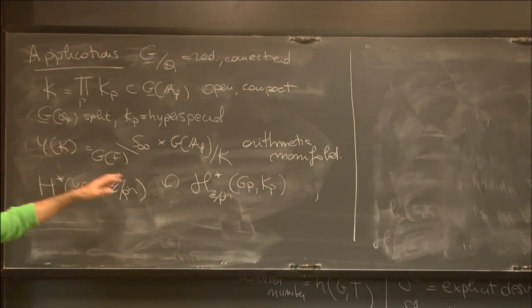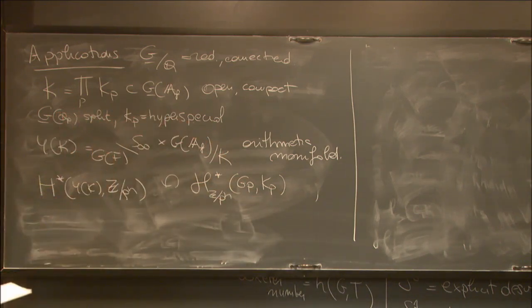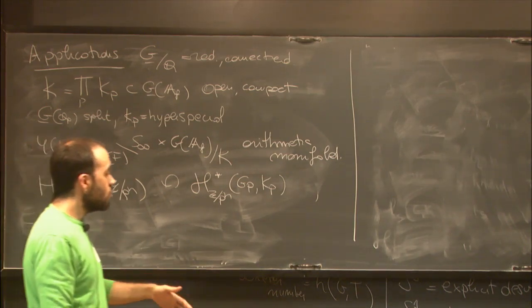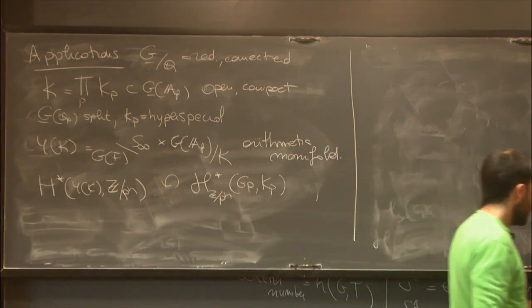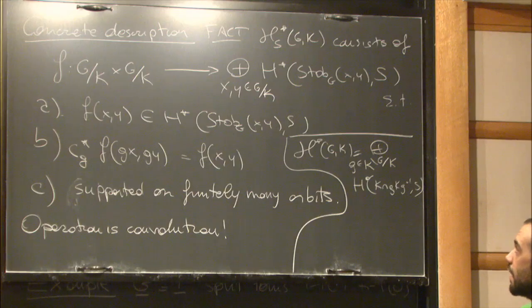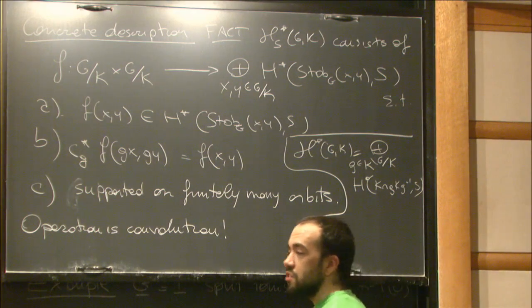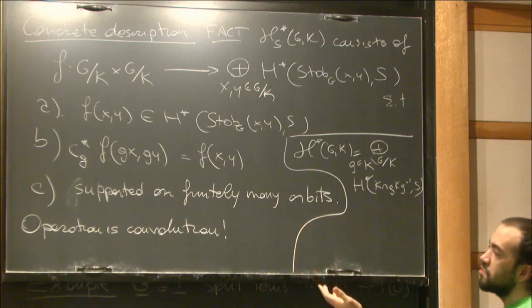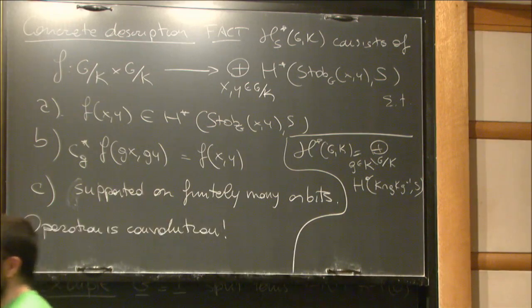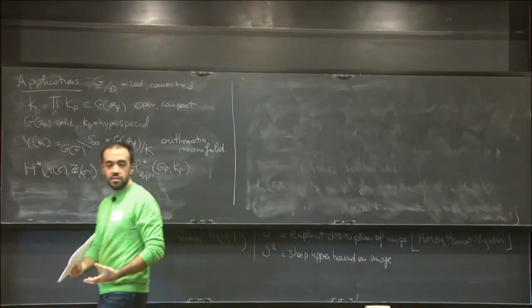I'm going to take Y(K) = G(F) \ S_∞ × G(A_F) / K to be the arithmetic manifold. The cohomology of this arithmetic manifold with Z/p^n coefficients is acted upon by my spherical algebra at p, again with Z/p^n coefficients for every n. I'll write G_p, K_p for my G(Q_p) and K_p. Now it is indeed the time to move on to the p-adic setup. These are profinite groups which are finite index into the maximal compact, and these subgroups tend to have a commutator subgroup of finite index, so H₁ will be trivial if your coefficient ring has characteristic zero. That's why you really need to work with torsion coefficients.